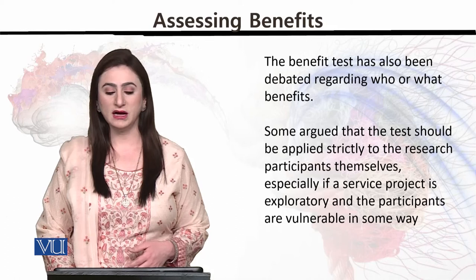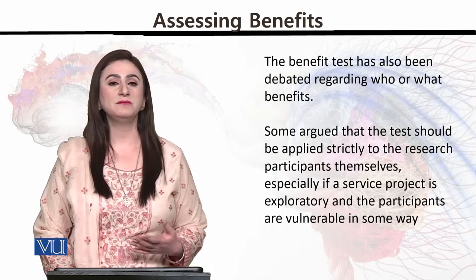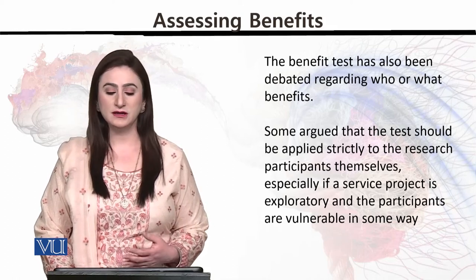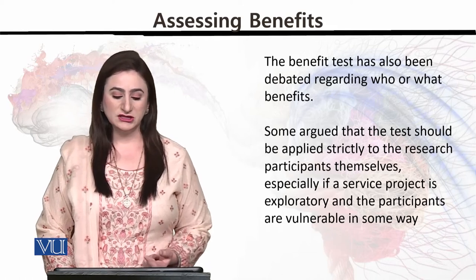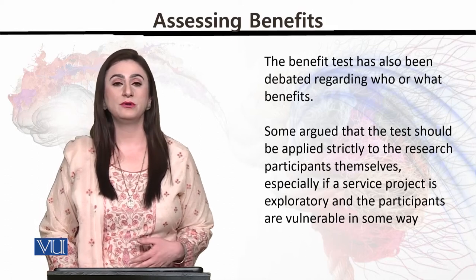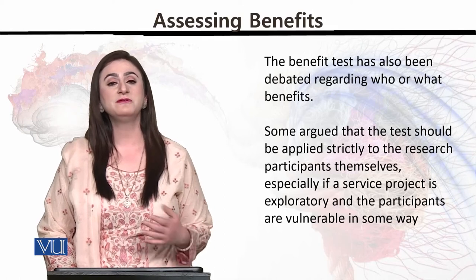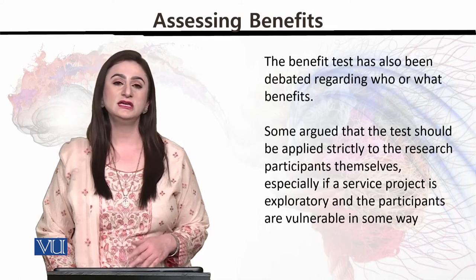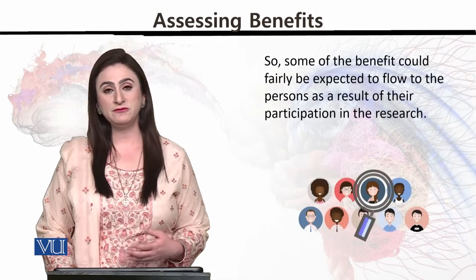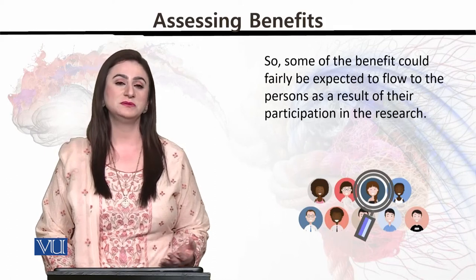Some argue that the test should be applied strictly to the research participants themselves — one school of thought is that benefit is only that which goes to the participants who became part of the research — especially if a service project is exploratory and the participants are vulnerable in some way. It is very important that the people who are themselves part of the participation and the experiment also receive the benefit, rather than the benefit going to someone else while the risk falls on the participants. So some of the benefit could fairly be expected to flow to the person as a result of their participation in the research.